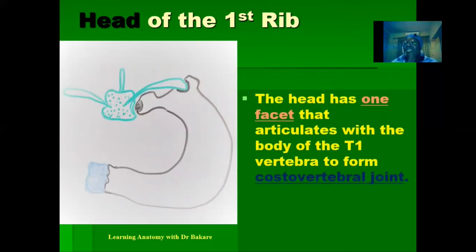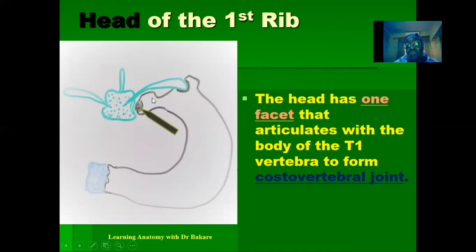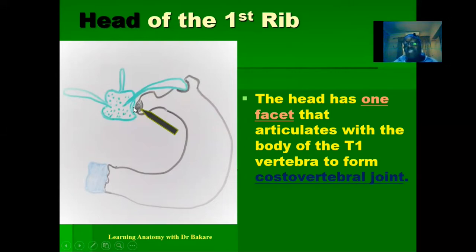The head of the first rib is distinct because it has only one facet, unlike the typical ribs which have two facets. This facet articulates with the body of the first thoracic vertebra, and the joint created at that region is the costovertebral joint — between the facet of the head of the first rib and the body of the first thoracic vertebra.